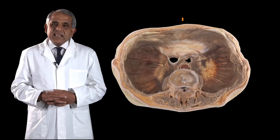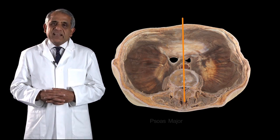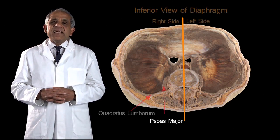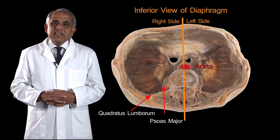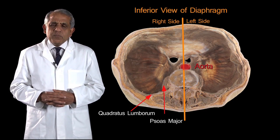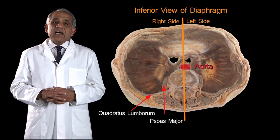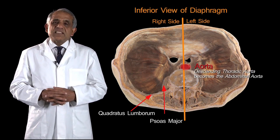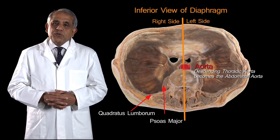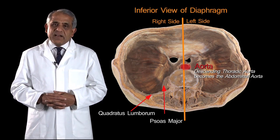The diaphragm is traversed by three important tubes. The largest of these is in the posterior midline — that is the aorta. The descending thoracic aorta crosses the diaphragm almost exactly in the midline to become the abdominal aorta, and this is the widest of the three major openings in the diaphragm.